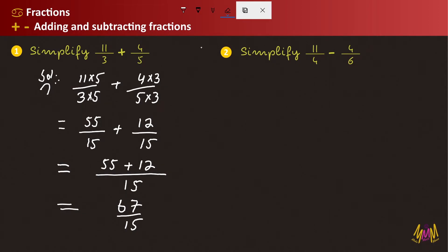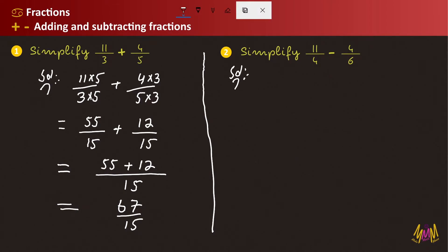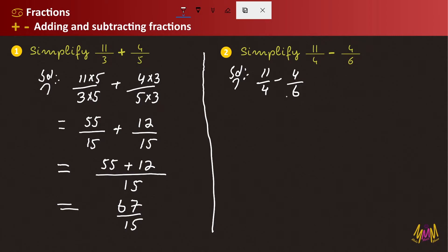Now for Example number 2, using the same method. The question is 11 divided by 4 minus 4 divided by 6. The denominators are 4 and 6, which are not the same. We find the LCM: 6 is 4 multiplied, and 4 is 6 multiplied, so 6 multiplied by 4 is 24. The LCM is 12, so the denominator becomes 12.